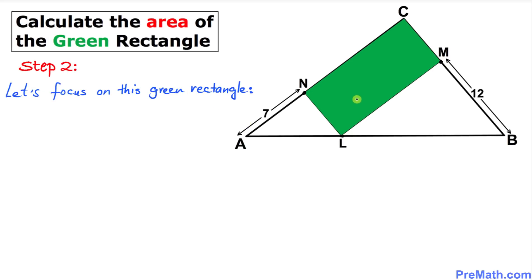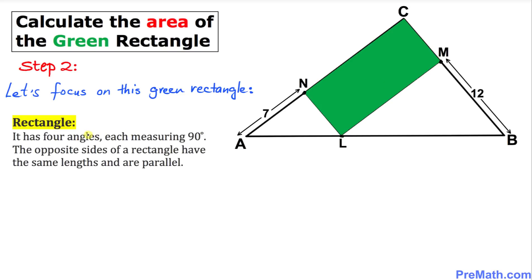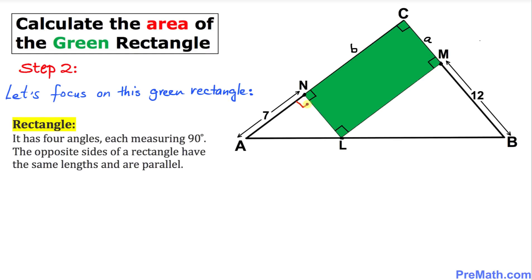In our next step, let's focus on this green rectangle. A rectangle has four angles each measuring 90 degrees, and moreover the opposite sides of a rectangle have the same lengths and are parallel. So all these angles are going to be right angles — 90 degrees. If I call this side A, then the opposite side is also A, and likewise if I call this side B, then the opposite side is B as well.